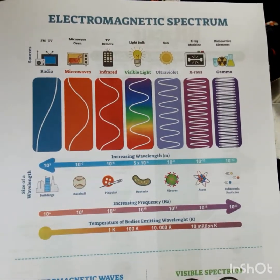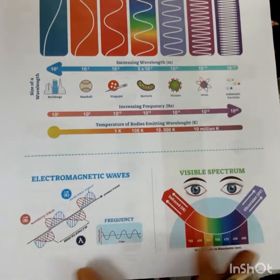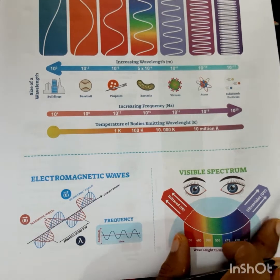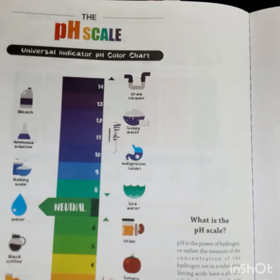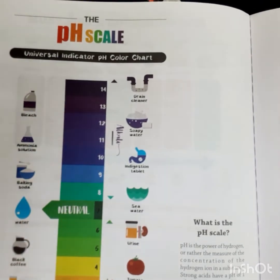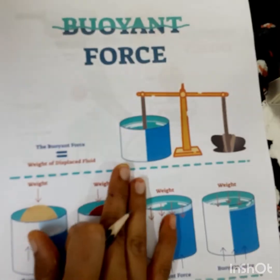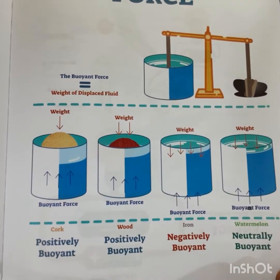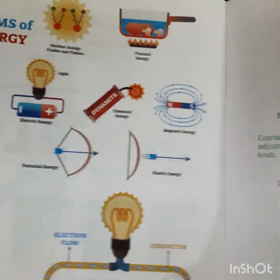Here, some pictures related to your science experiments are given, like the electromagnetic spectrum, electromagnetic waves, visible spectrum including infrared and ultraviolet rays. This is the pH scale, which is used to identify which is acid and which is base — the power of hydronium scale. This is the buoyancy force with related examples. And here, some forms of energy are given like nuclear energy, thermal energy, electrical, and magnetic.